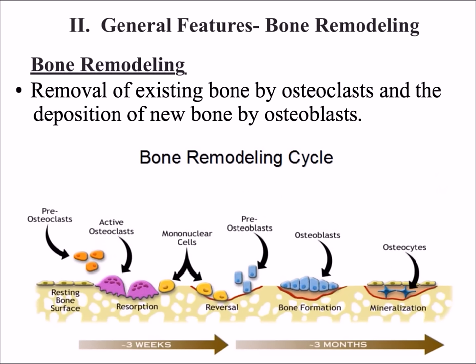Bone remodeling is just the reshaping of bone. In order to reshape bone, you need special cells called osteoclasts, which we've talked about before and will talk about again in the repair of a fracture.